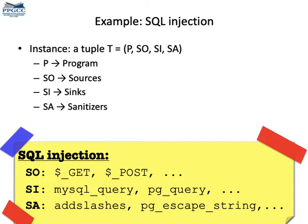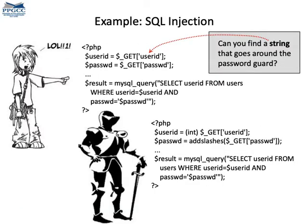Another very famous kind of tainted flow attack is SQL injection. In this case, an adversary sends to some database function a query that might harm the database. Again, the program on the top is unsafe and vulnerable — the adversary can control the contents of the GET array and build a bad SQL query that will be passed to the database. On the bottom, we see two sanitizers that we can use to make the program safer.